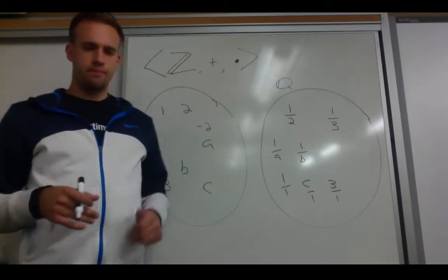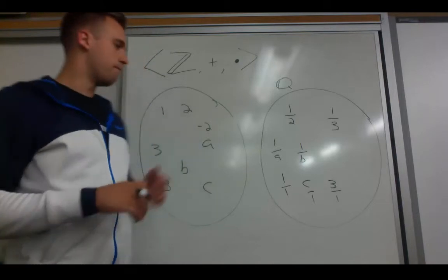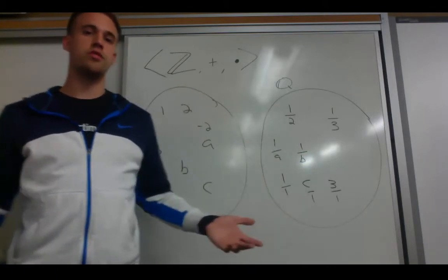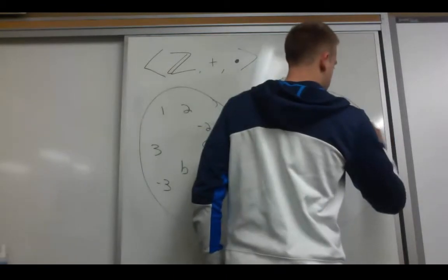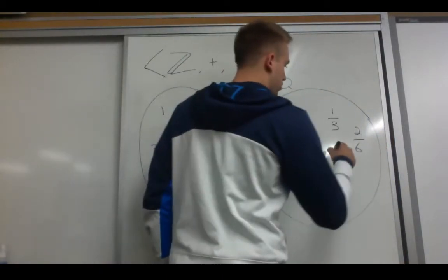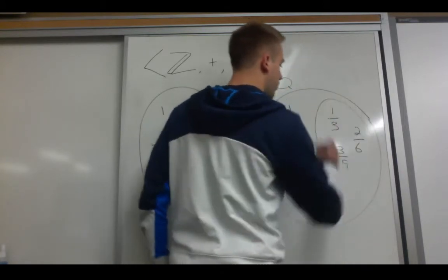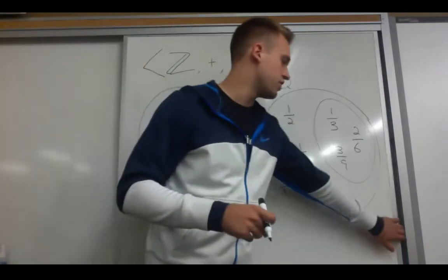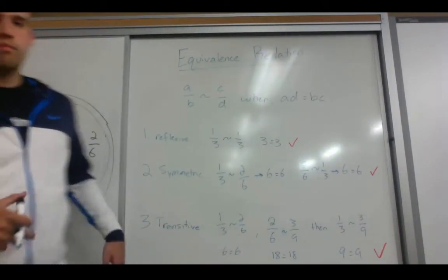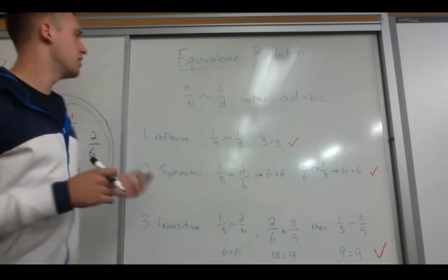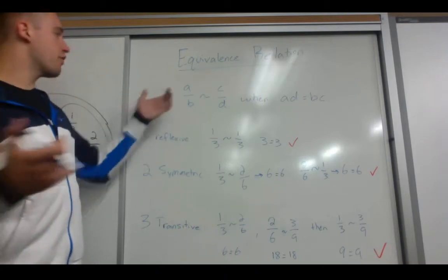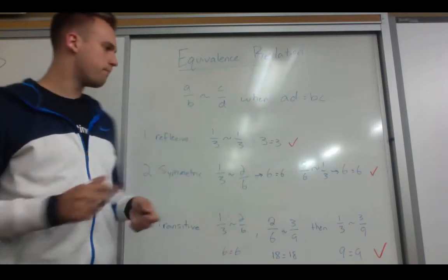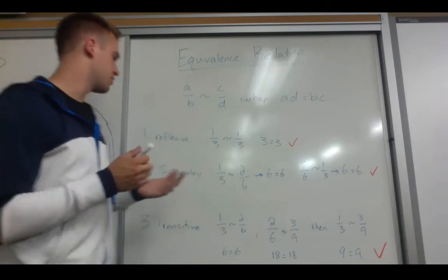We need to do two things: define an equivalence relation and check that addition and multiplication are well-defined. Within our field of formal quotients there are rational numbers equivalent to each other — 1 third is equivalent to 2 over 6, which is equivalent to 3 over 9. So we need to define an equivalence relation. The equivalence relation for our field of formal quotients is: A over B is equivalent to C over D when A times D equals B times C, which comes from cross-multiplication of rational numbers.